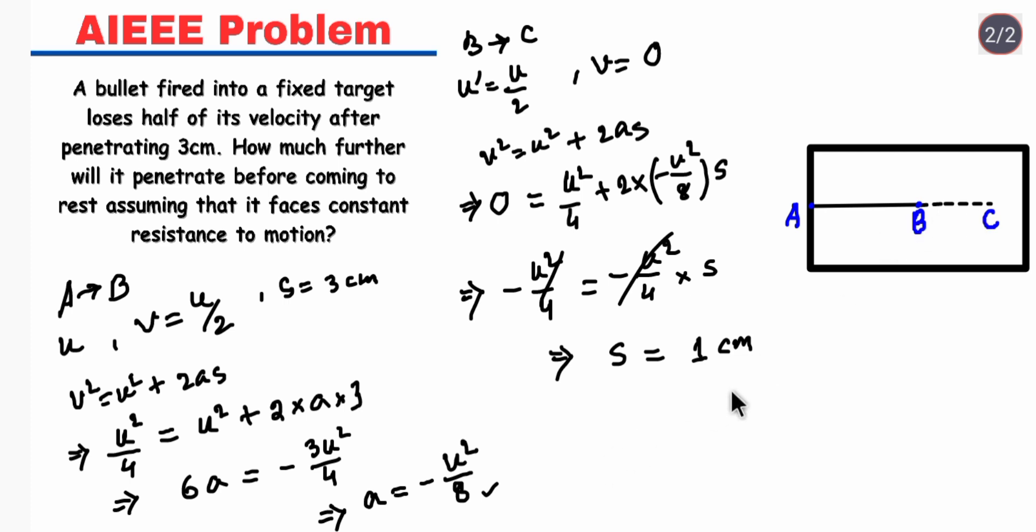The distance from B to C is 1 centimeter. That means the bullet will further penetrate 1 centimeter.